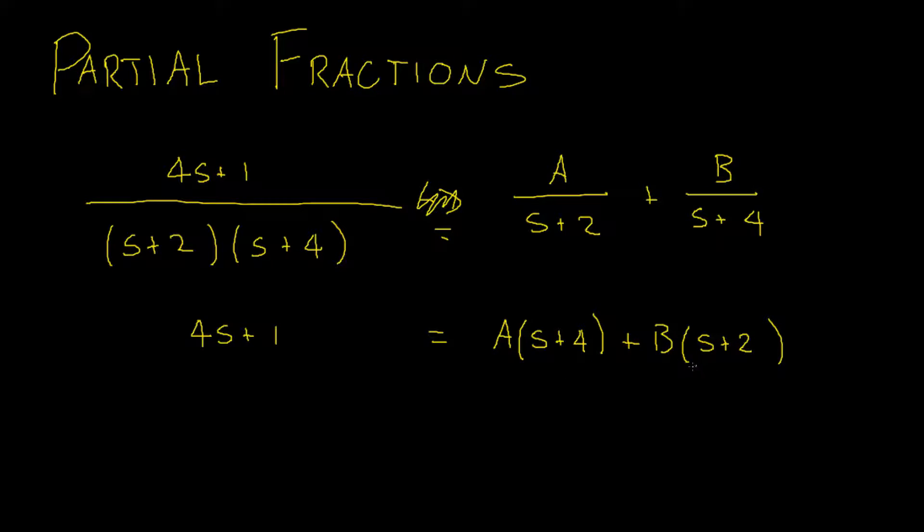We can now expand these and collect the like terms, which would give us As plus Bs plus 4A plus 2B. On the left-hand side, that remains unchanged, so it's still 4s plus 1.